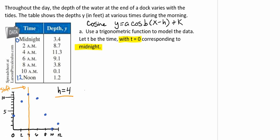For our a value, we need to find our amplitude. Our amplitude can be calculated by taking half of the maximum value minus our minimum value. We have a maximum value of 11.3 and a minimum value of 0.1. Calculating that gives us an amplitude of 5.6. This is our a value.